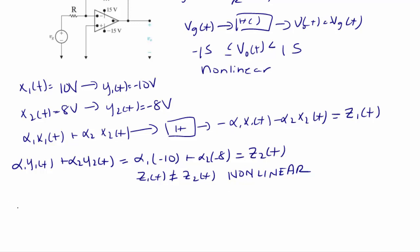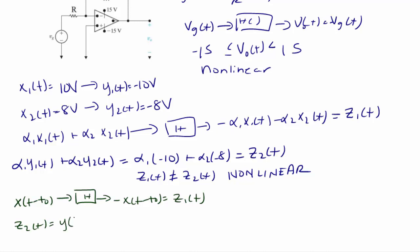Now let's test the op-amp system for time invariance. If the input x(t minus t_0) goes through the function, the output is negative x(t minus t_0), which we call z1(t). If we take the output and delay it by t_0, we get z2(t) = y(t minus t_0) = negative x(t minus t_0). It does not matter whether the input or output is delayed — z1(t) equals z2(t), so this system is indeed time invariant.